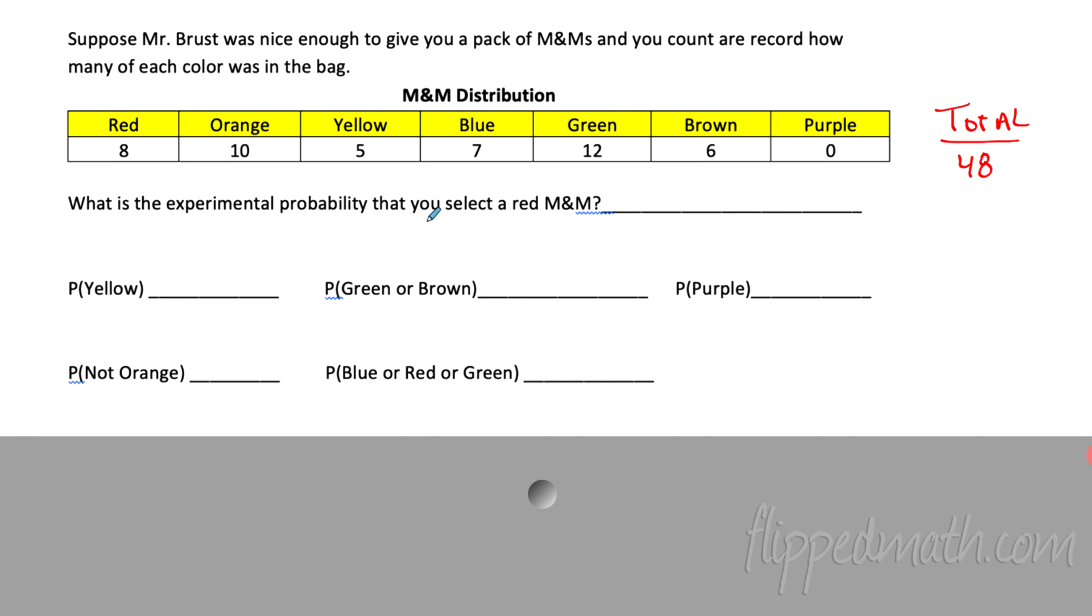So when I want to find the probability we select a red M&M, I'm going to write that like this. The probability that we get a red M&M is going to be equal to 8 out of 48. Well, guess what? We like our fractions reduced around here. So we're going to reduce that to one out of six. Easy enough. So the probability of getting red is one out of six.